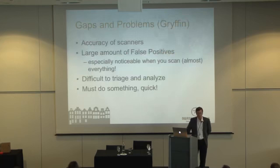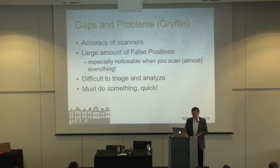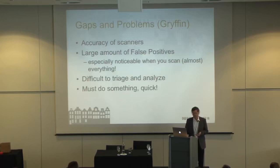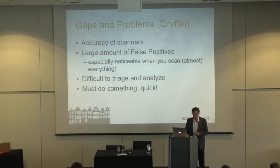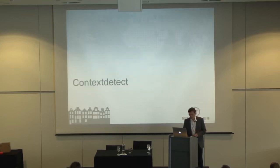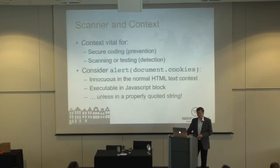The problem was the accuracy of scanners. Griffin just ran the scanners but it depends on them to provide quality results. If there are false positives coming from scanners they are still present in Griffin, and when you are trying to do large-scale CD-driven scanning you get overwhelmed with noise. I was pushed by my teammates to do something quickly, and this is how Context Detect was born.